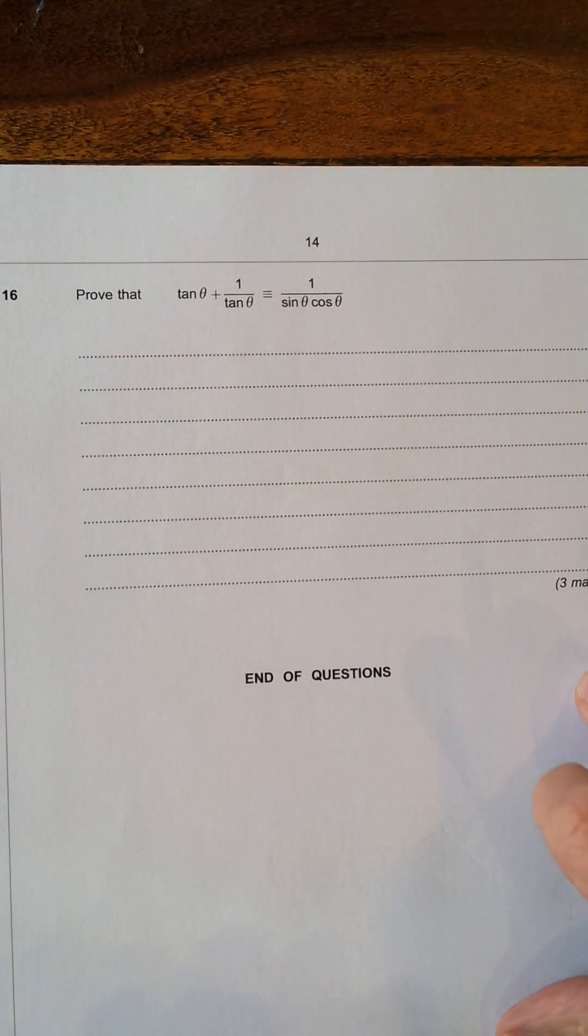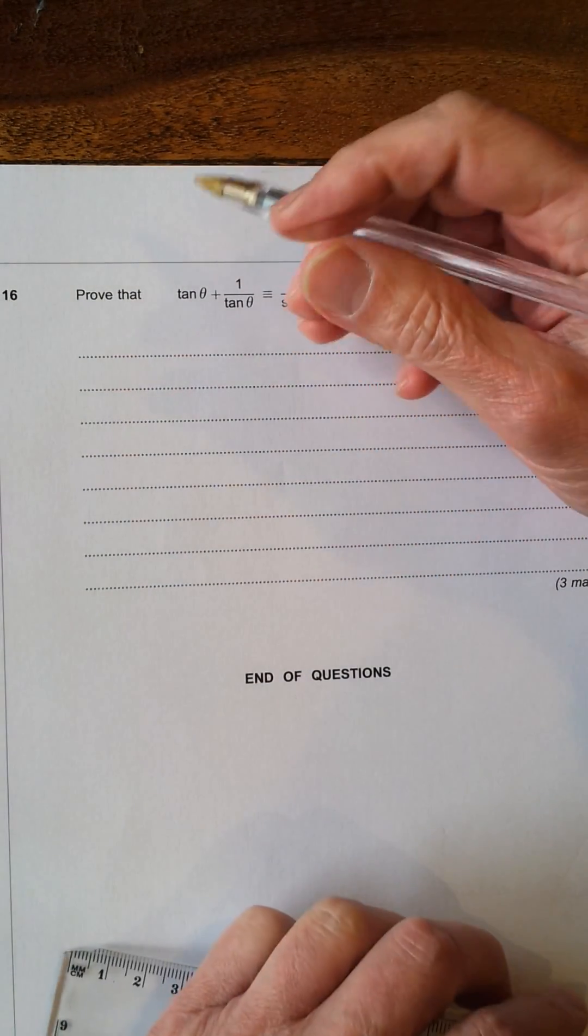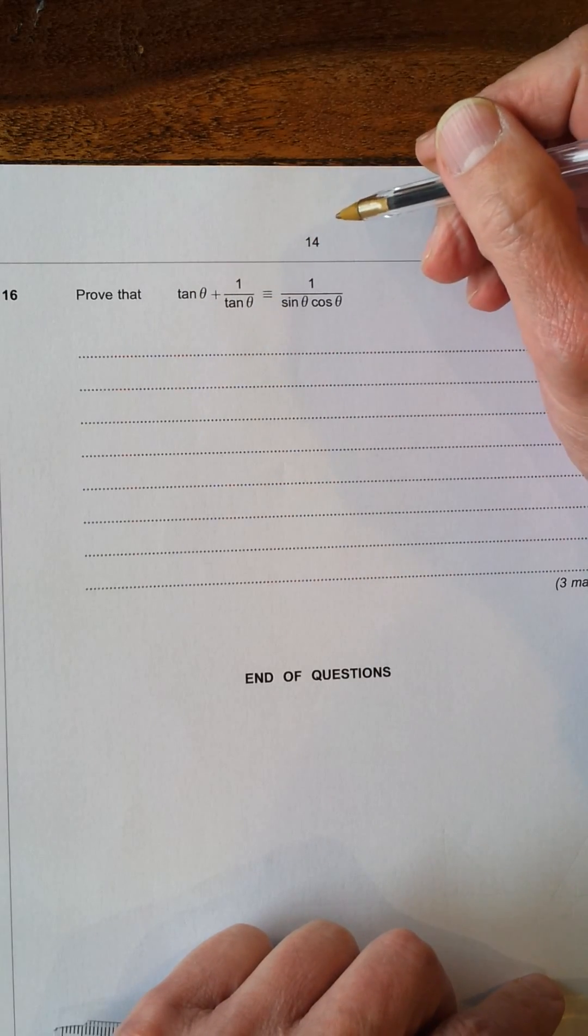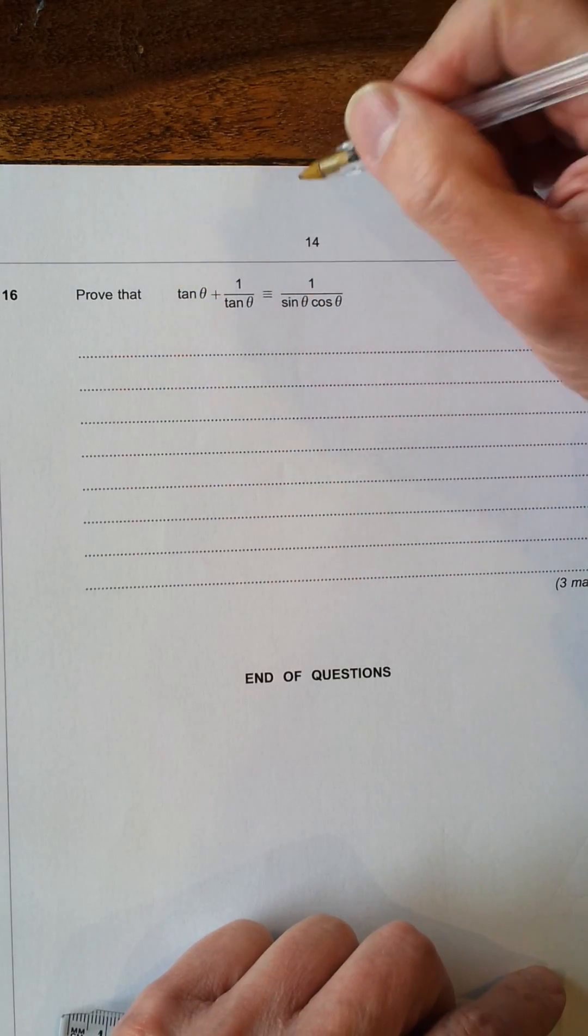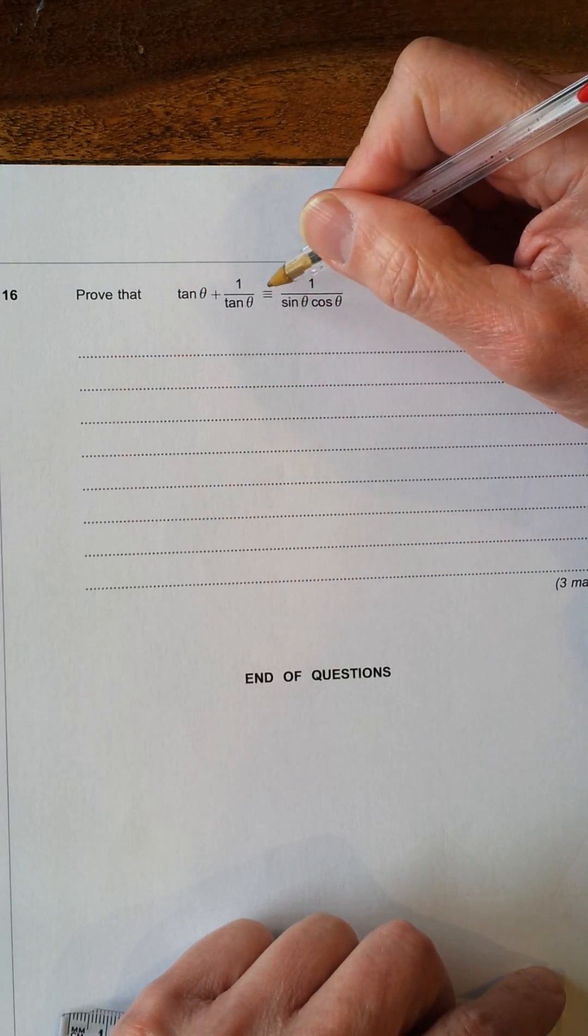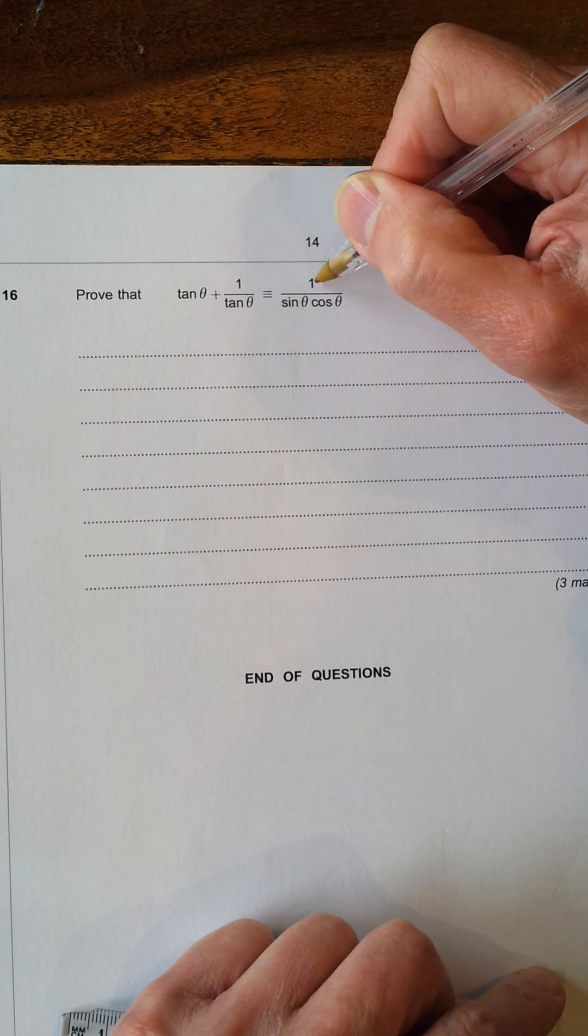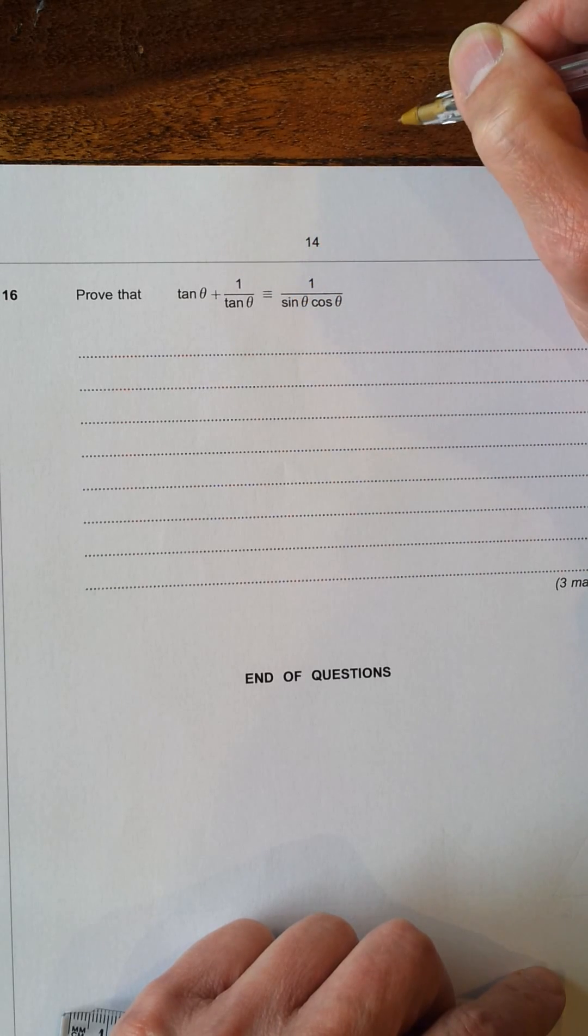Okay, question 16 is using the trig identities. It says prove that tan θ + 1/tan θ is identical to 1/(sin θ cos θ).